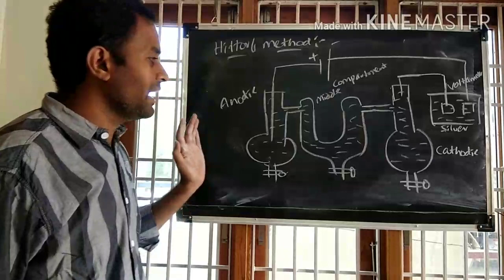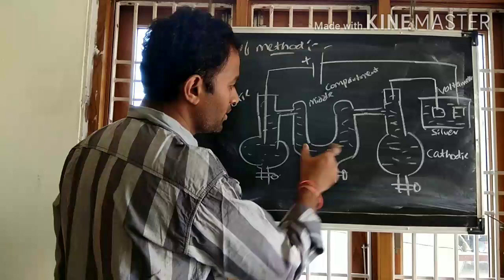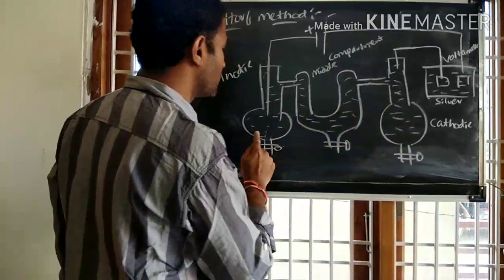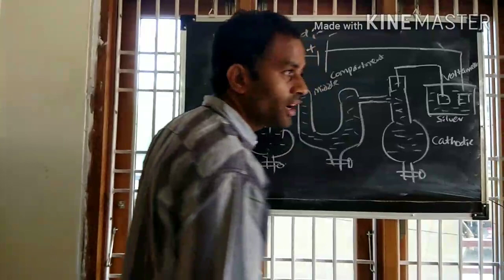Observing this device, we can see there are three glass tubes. In the middle, there is a U-shaped glass tube connected to two glass bulbs. The left side is connected to the anodic compartment and the right side to the cathodic compartment. The whole apparatus is connected to a voltmeter, commonly called a silver voltmeter.